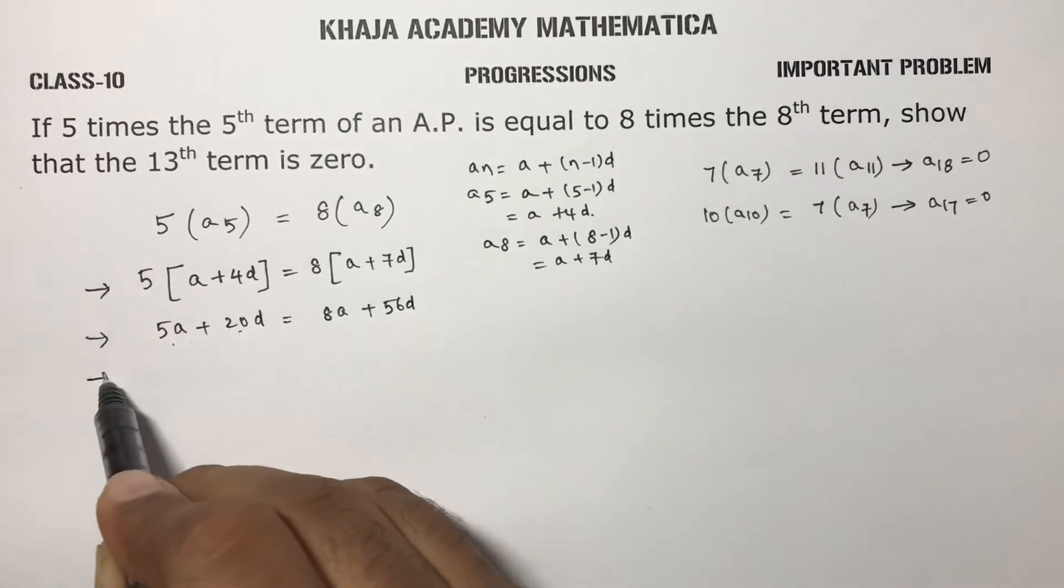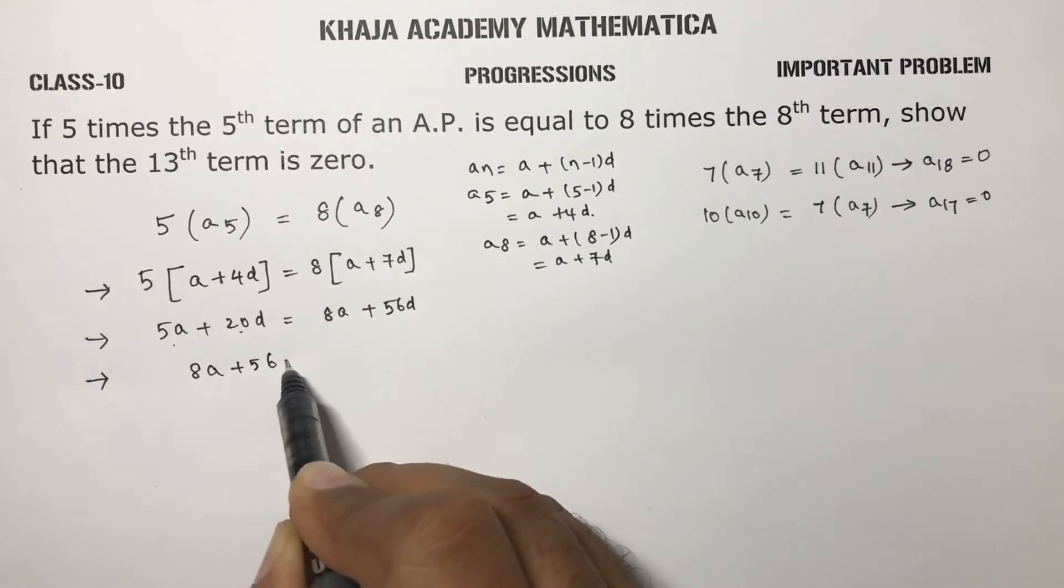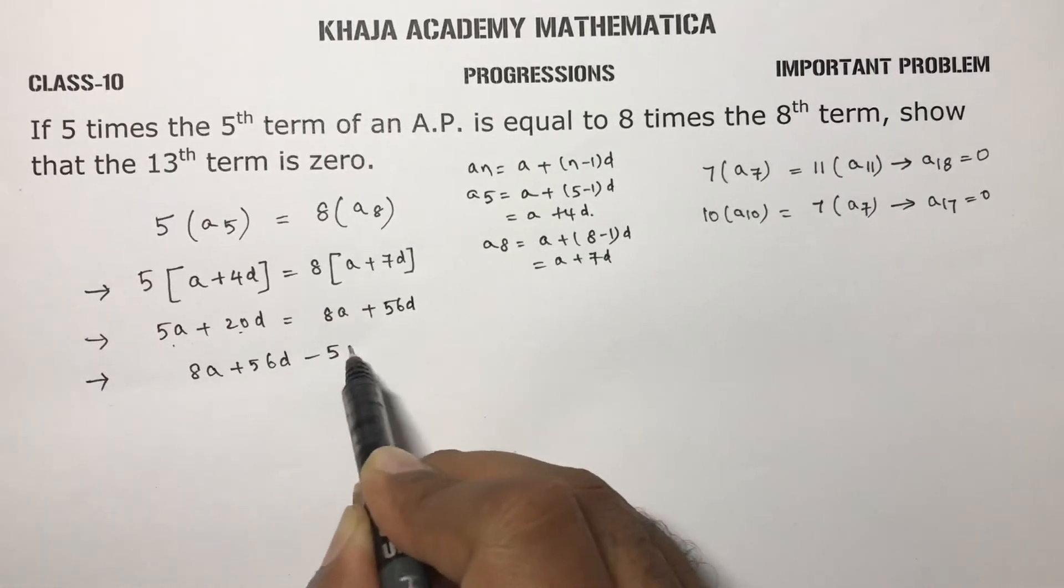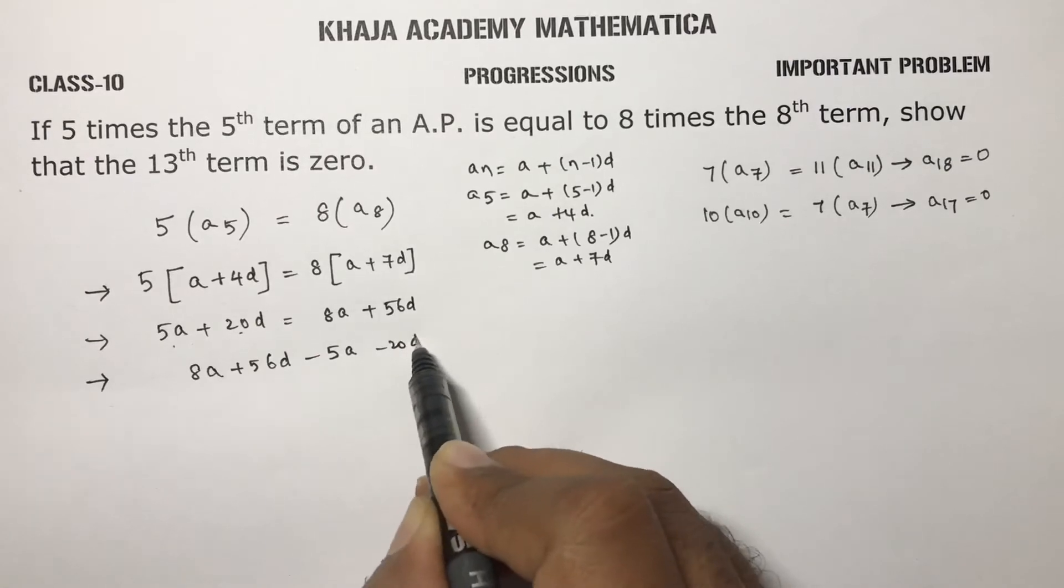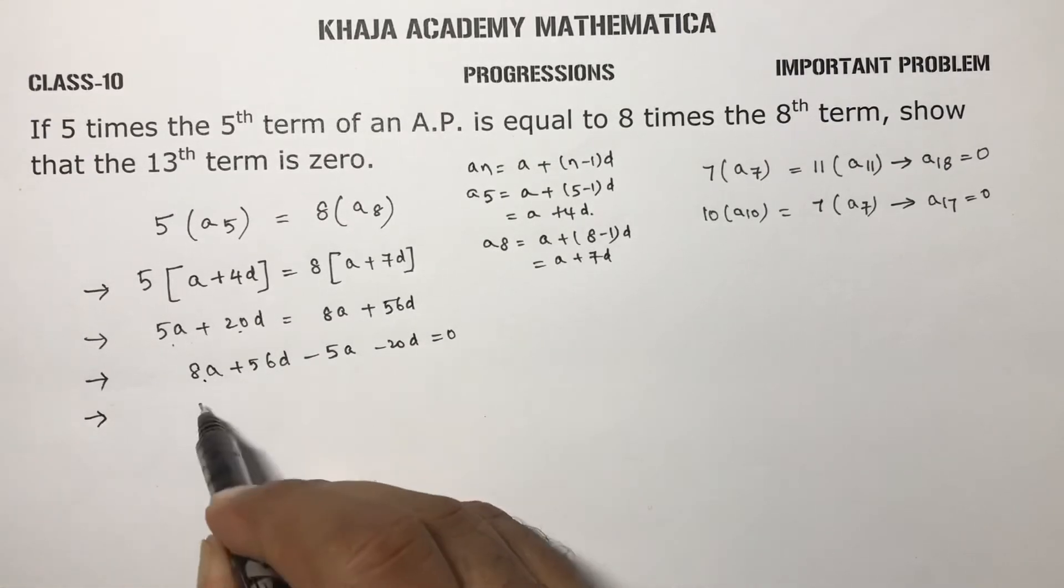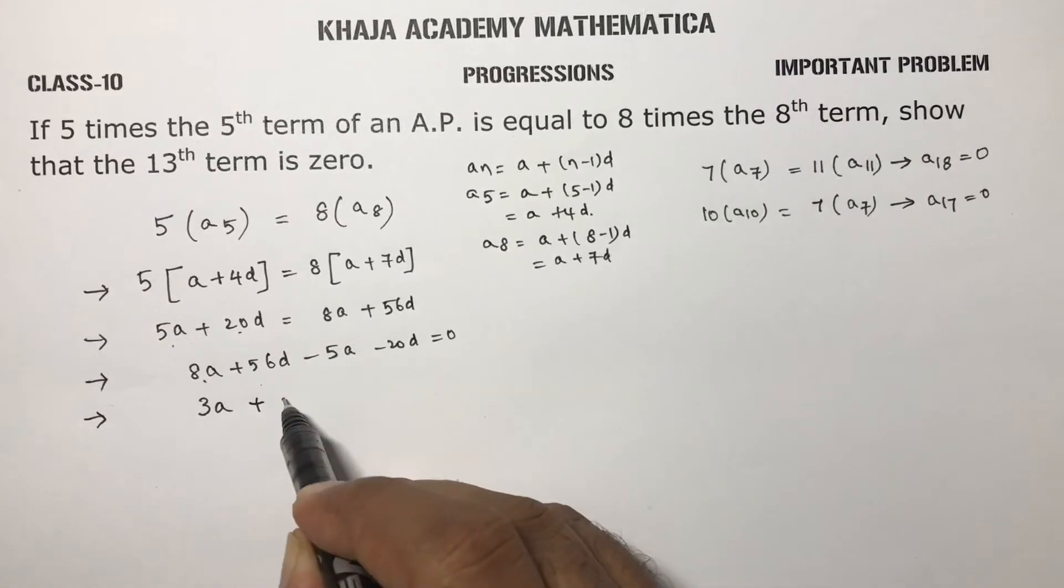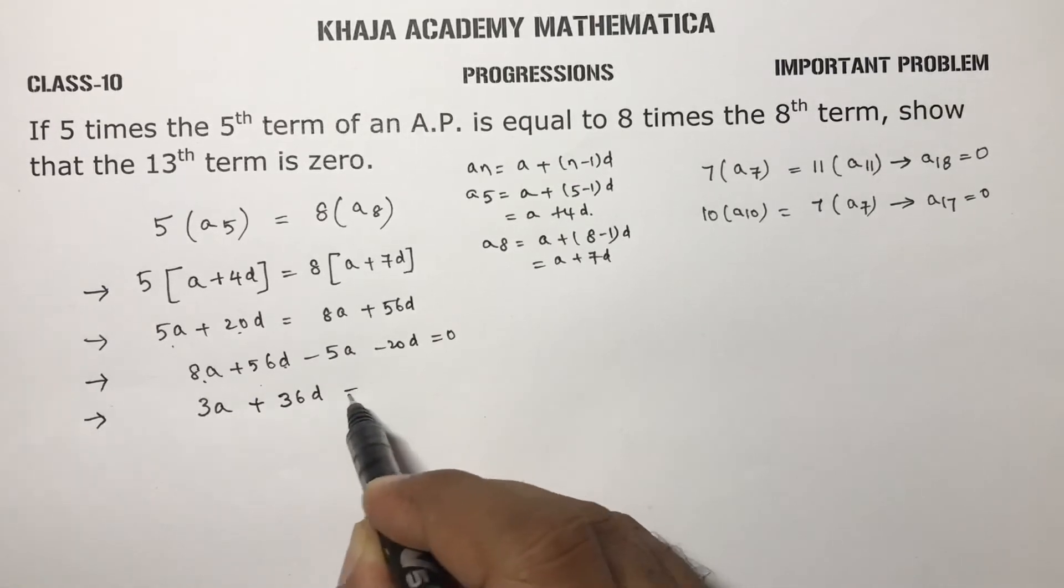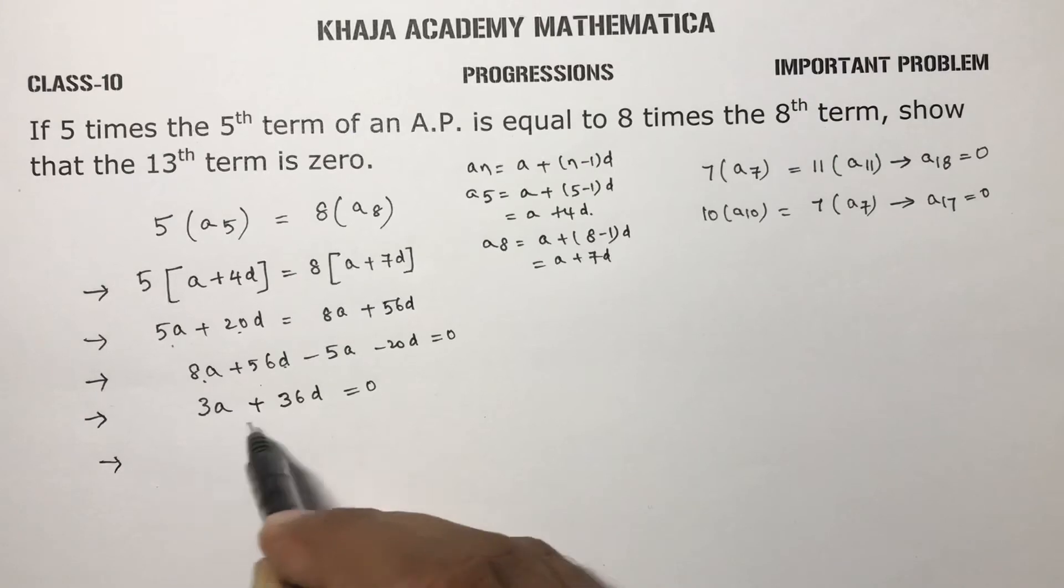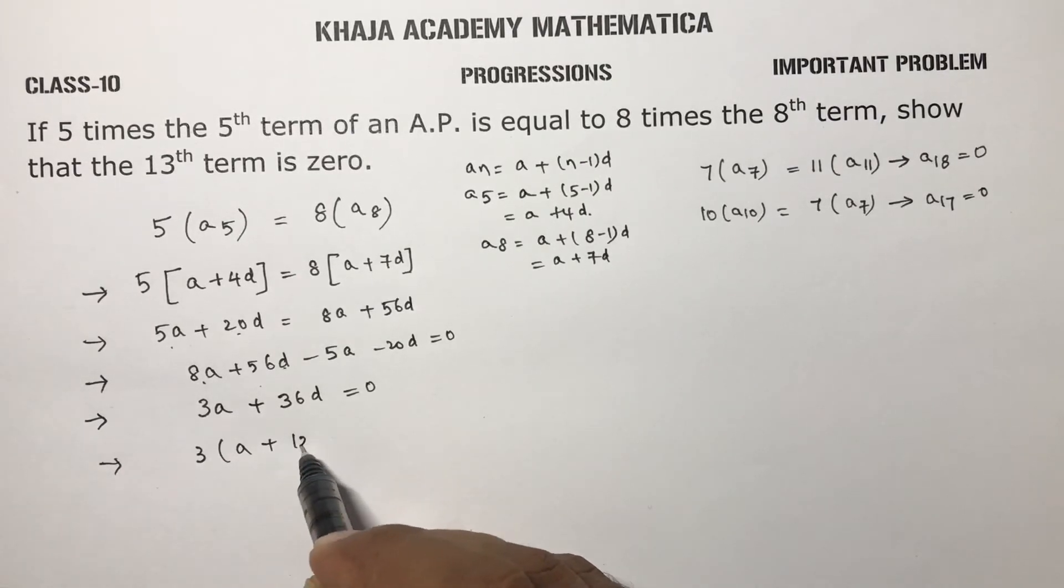If we transpose these two values to the other side: 8A plus 56D minus 5A minus 20D equals 0. 8 minus 5 is 3A. 56D minus 20D is 36D equals 0. So if we take out 3, A plus 12D.